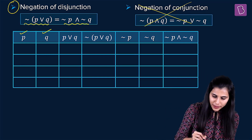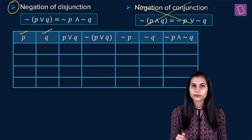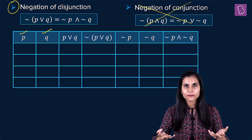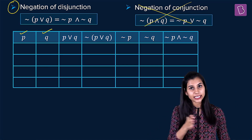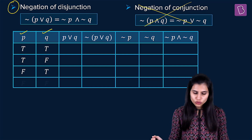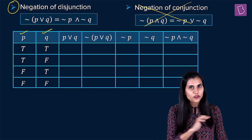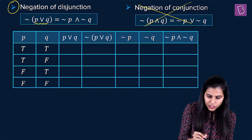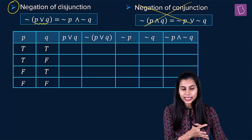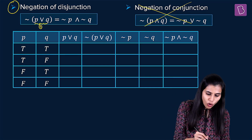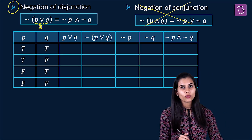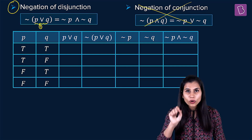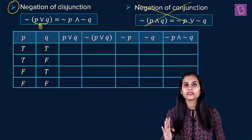Let's build the truth table. Start with the basic columns P and Q — filling them like two coin flips: T-T, T-F, F-T, F-F. Next, compute P or Q for the left-hand side. Disjunction is false only when both are false; otherwise it is true. So P or Q gives: true, true, true, false.